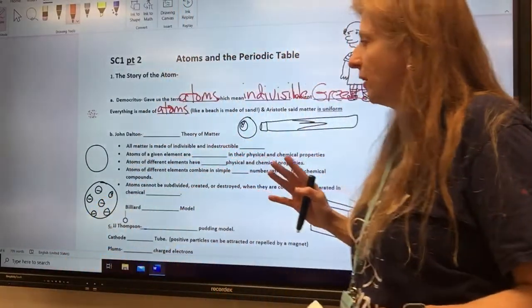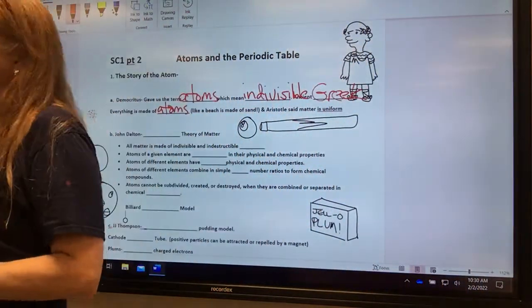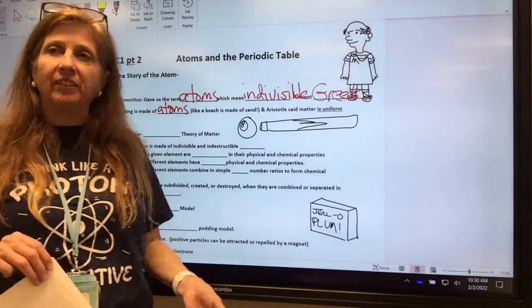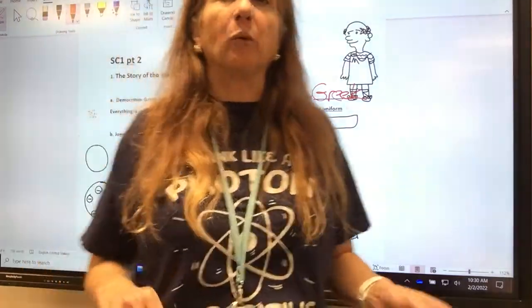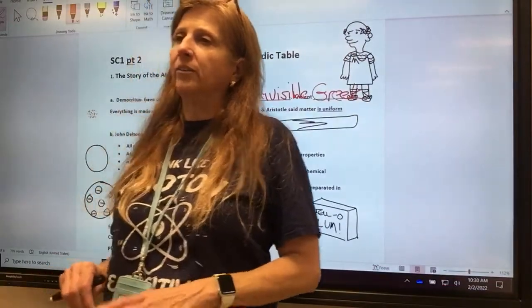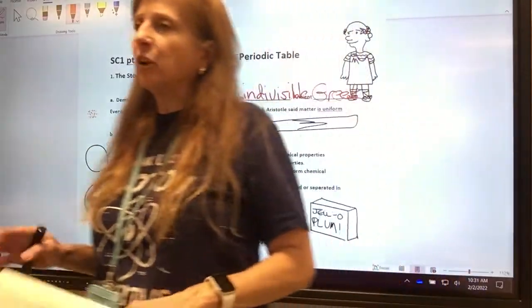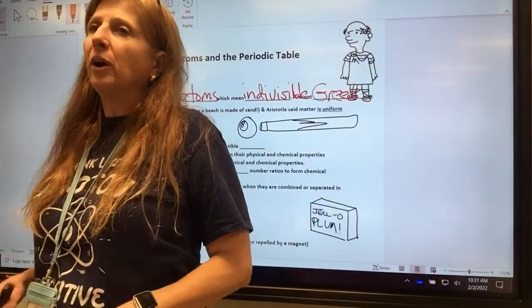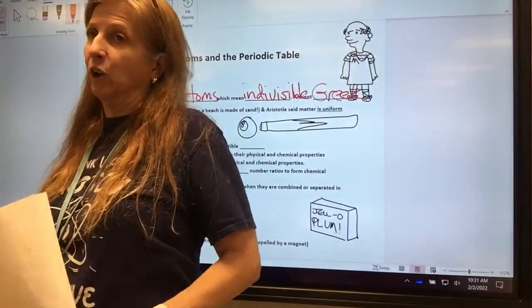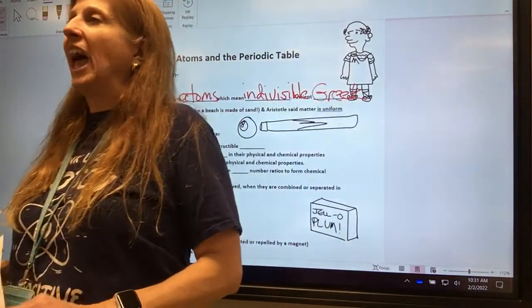The next guy we're going to talk about is John Dalton. John Dalton was English, and it's in the 1700s. We did a big hop from Democritus, ancient Greek, to John Dalton, 1700s. And so what was going on in between?